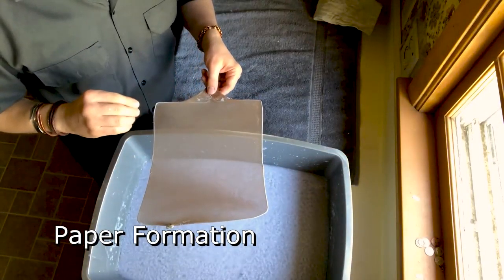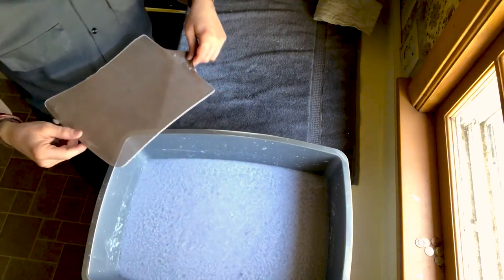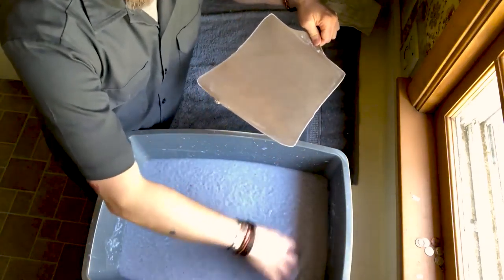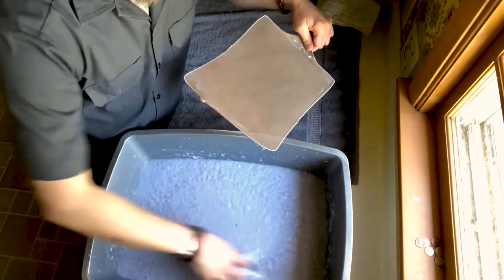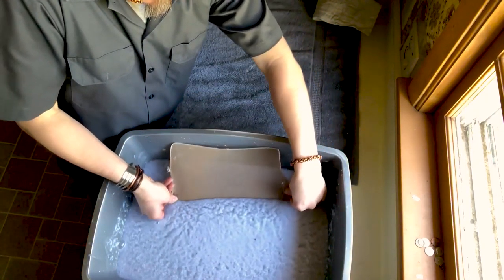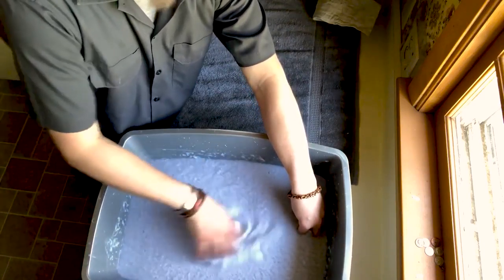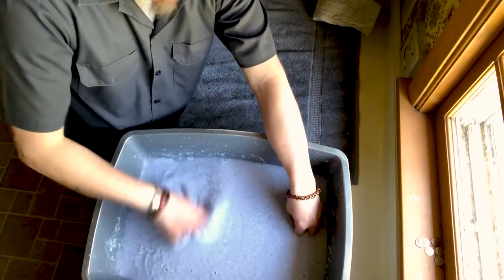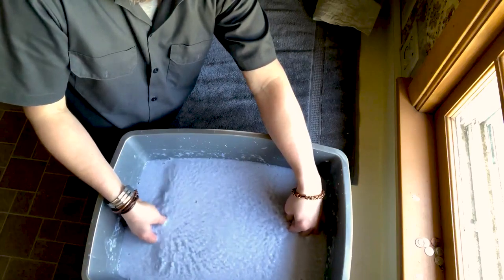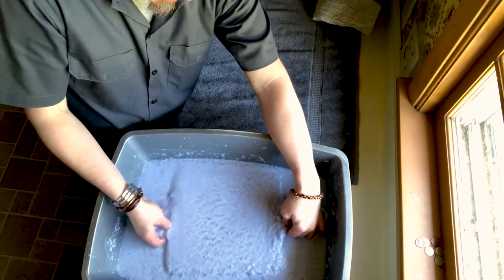Now that our pulp bath is ready to go, we are going to take our makeshift deckle, and we are going to dip it down the side of our bin so that way it gets underneath all of that paper pulp. We want to try to prevent any paper pulp from being sandwiched down below it. Agitate the pulp, suspend it in water, and kind of give it a shake as you're coming up. And this will help you end up with a more consistent sheet thickness.